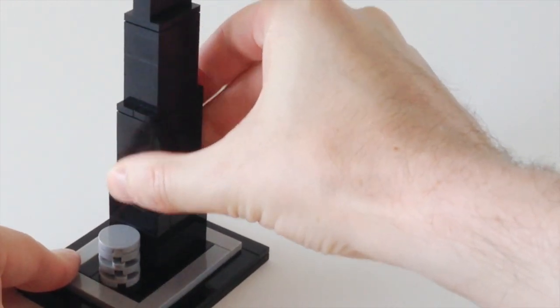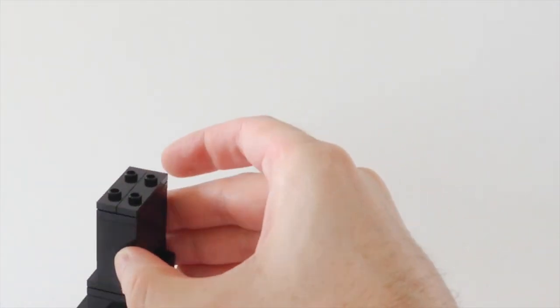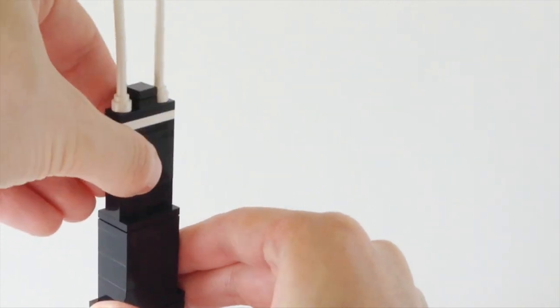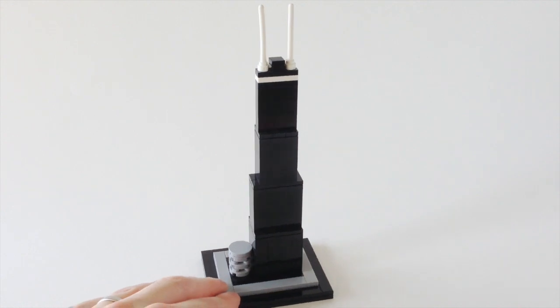Then you build the next level and then again some jumper plates, and then finally at the top, the same here. So it's a very simple construction built in these four different sections and then you have these antennae at the top.